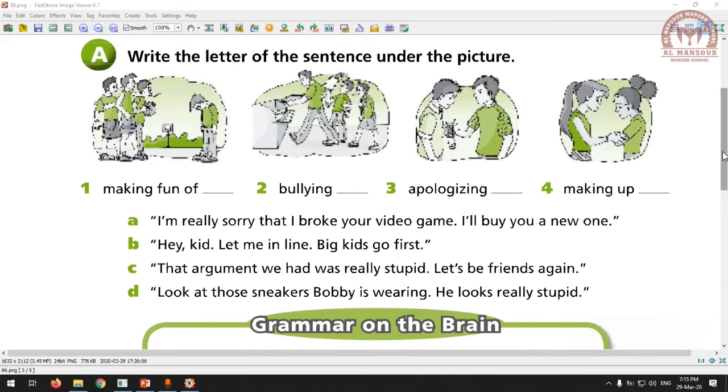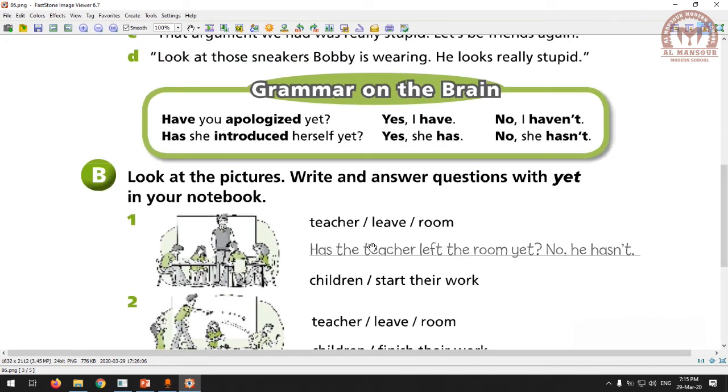Here's an example for the grammar we had today. Have you apologized yet? Yes I have, or no I haven't. Has she introduced herself yet? Yes she has, or no she hasn't. Remember to put the verb in the past participle. Yet comes at the end of the sentence, and because it was a question, have and has come at the beginning. In yes and no answers, yes she has or yes I have - the helping verb we put it in the answer. We match the answer with the question.